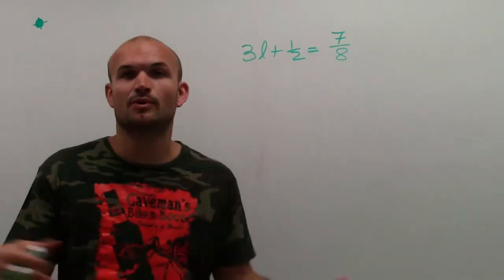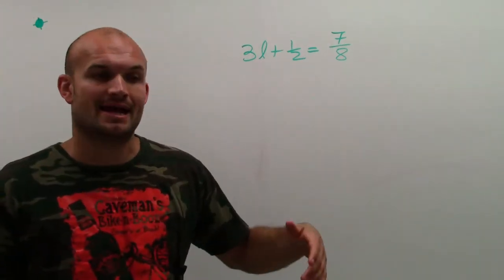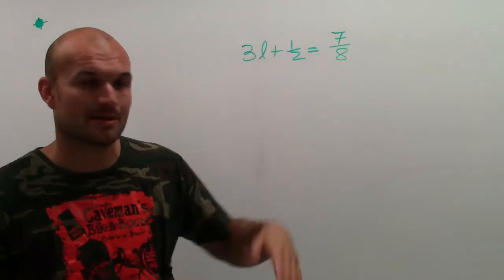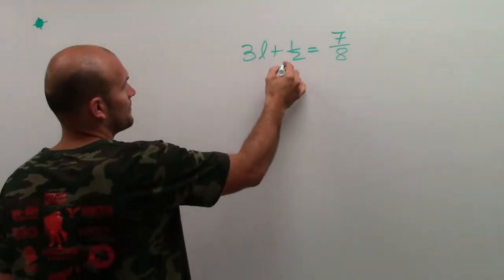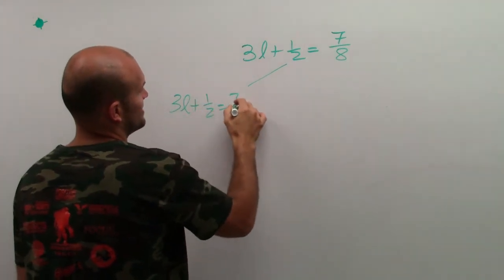So the first way is just using what we've been talking about so far, using our reverse order of operations and inverse operations. So the first way I'll do this, 3L plus 1 half equals 7 eighths.